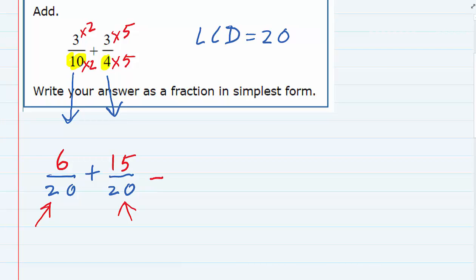Now that we have a common denominator, we can add, and we're going to keep that denominator. In the top, though, we have 6 plus 15, which would give us 21.